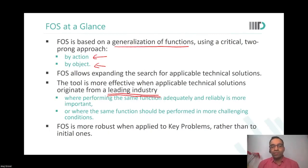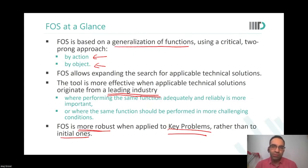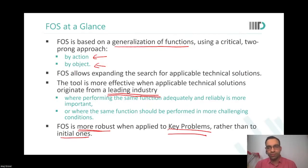Be aware that function-oriented search is definitely much more robust when you apply it to key problems rather than initial ones. What tool are we talking about — key problems and initial problems? In the cause-effects chain analysis. So you notice function analysis and cause-effects chain analysis are feeders into this solution-finding method. If you have not done those adequately well, you will struggle with FOS also. But FOS can give you very fast solutions for your problem statement.